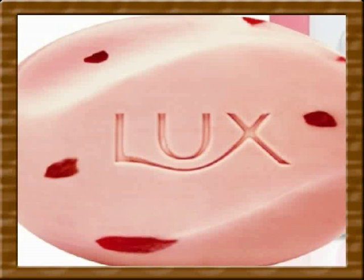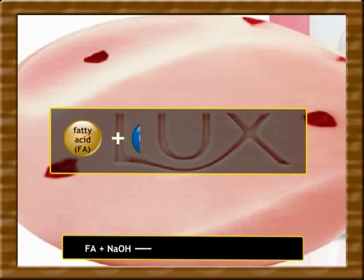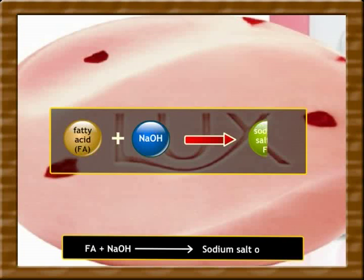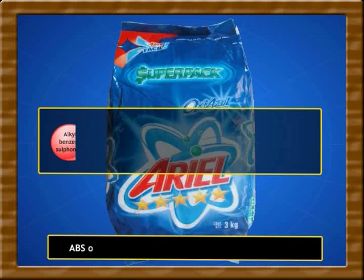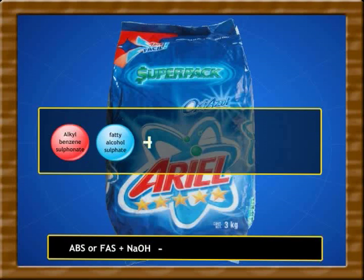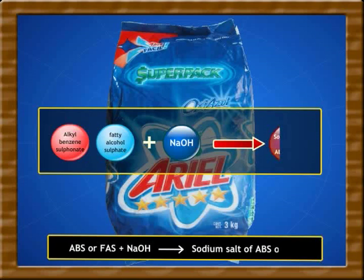In the next step of their formation, fatty acid reacts with sodium hydroxide to form sodium salt of the fatty acid, whereas alkyl benzene sulfonate or fatty alcohol sulfate react with sodium hydroxide to form sodium salt of ABS or FAS respectively.